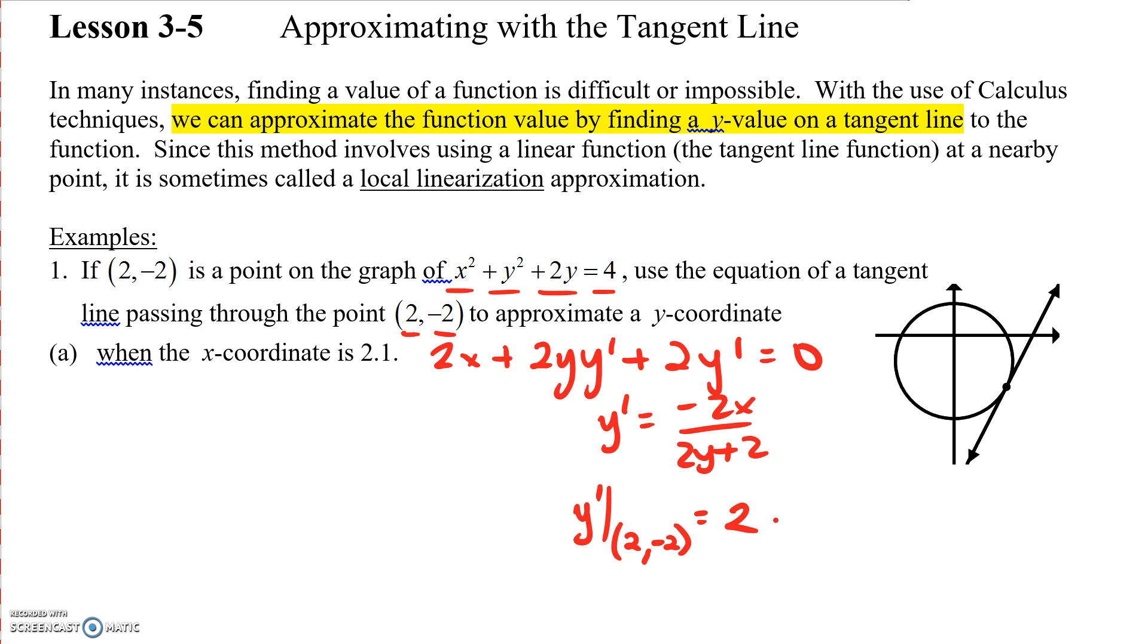Then I'm going to create my equation of the tangent line. My tangent line is going to be y + 2 = 2(x + 2). I just got that from my point and put it in point-slope form.